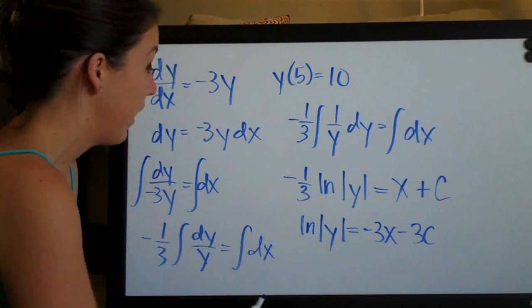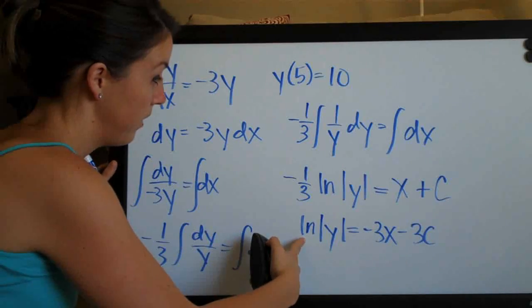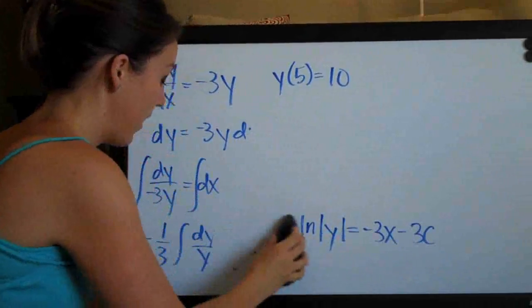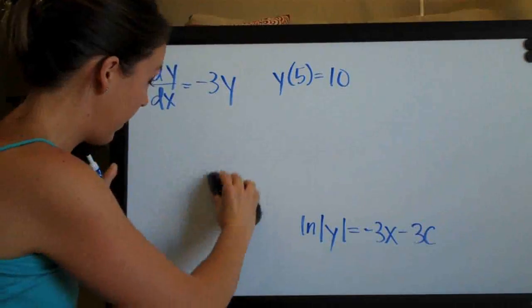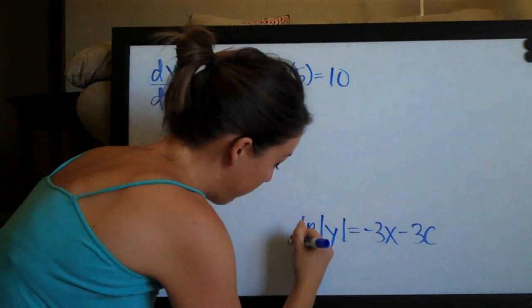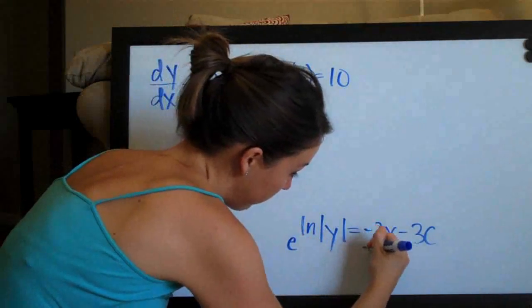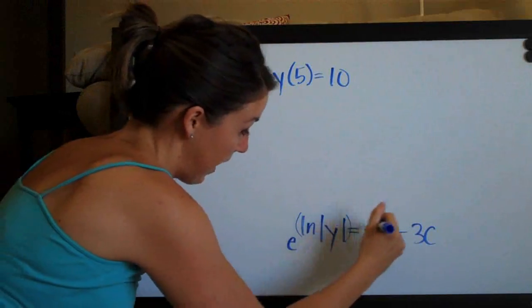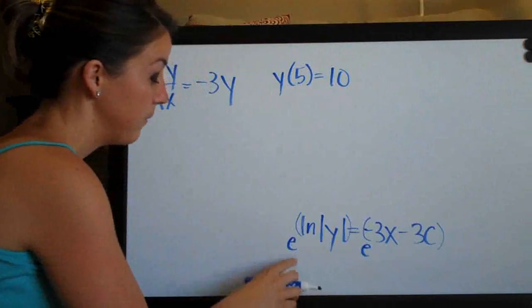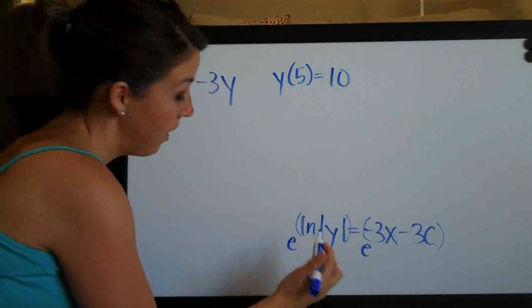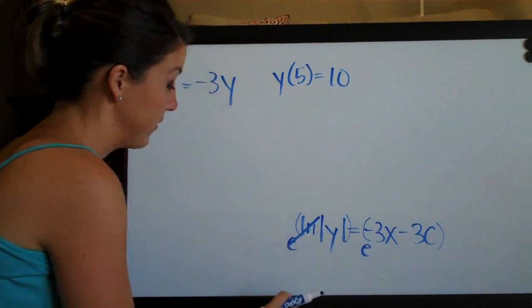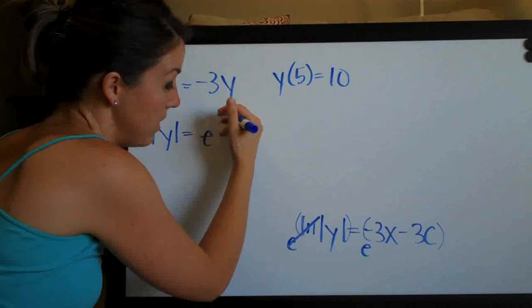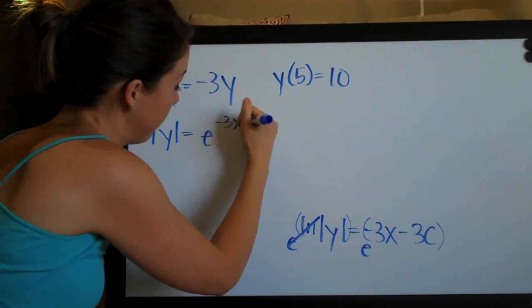Then to get rid of the natural log here, because remember we're trying to solve for y, we need to raise both sides of this equation to base e. In other words, the ln of y and the negative 3x minus 3c become the exponents of this equation. So we raised both sides to base e because this e in natural log will then cancel out. So we'll be left with absolute value of y equals e to the negative 3x minus 3c.